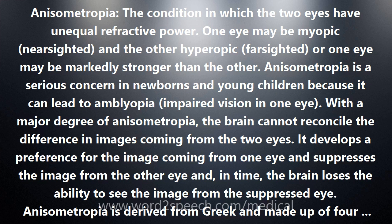Anisometropia is a serious concern in newborns and young children because it can lead to amblyopia, impaired vision in one eye. With a major degree of anisometropia, the brain cannot reconcile the difference in images coming from the two eyes. It develops a preference for one eye, suppresses the other, and in time loses the ability to see the image from the suppressed eye.